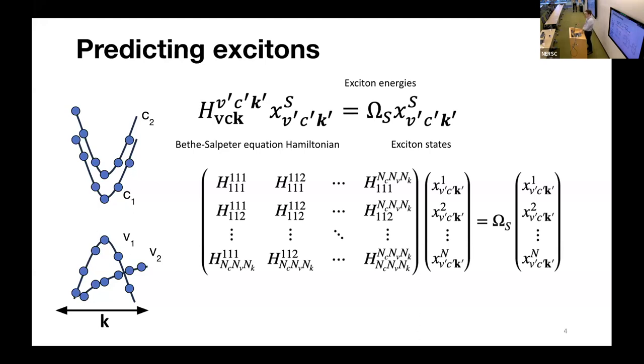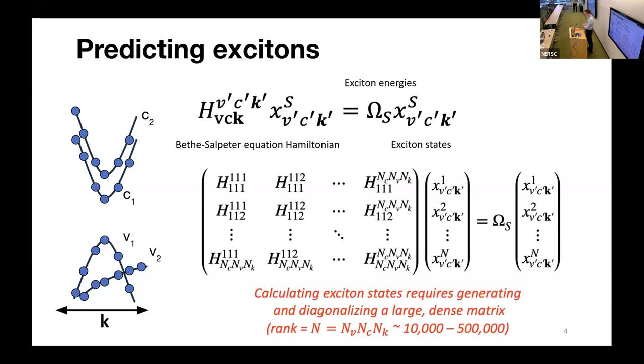In order to describe the excitons well, we typically need to construct a matrix that is sufficiently large to capture all the relevant interactions. This can be on the order of maybe 10,000 up to 500,000 in rank. So already we're seeing this is quite a computational effort to diagonalize.